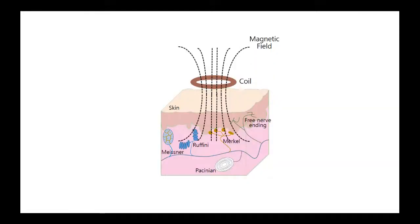All human body activities and functions are controlled by electrical and chemical reactions. These reactions occur inside the human body, but similar results can be artificially generated from outside the body. Existing research induces tactile sensation by directly applying electric current to the skin, in a compact manner.